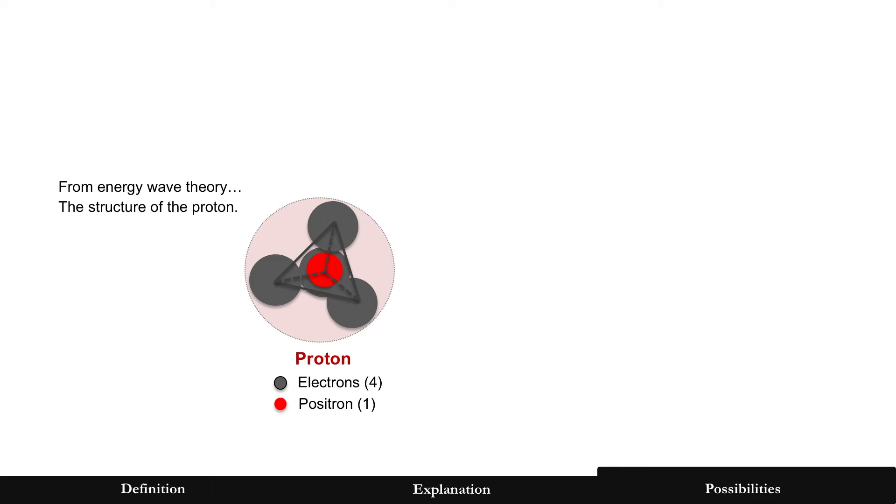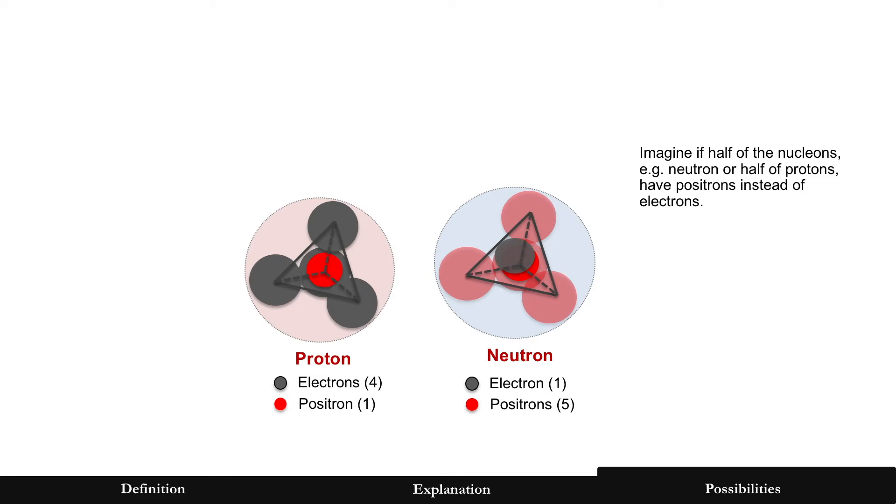but in that video, a proton consists of the pentaquark structure which was founded by CERN in 2015. And in the pentaquark, let's assume four electrons are at the vertices of the tetrahedron and the positron in the middle.